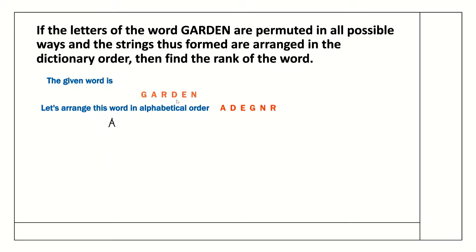If the first letter is A, this is a match. The number of strings formed is 5 factorial, which equals 120.